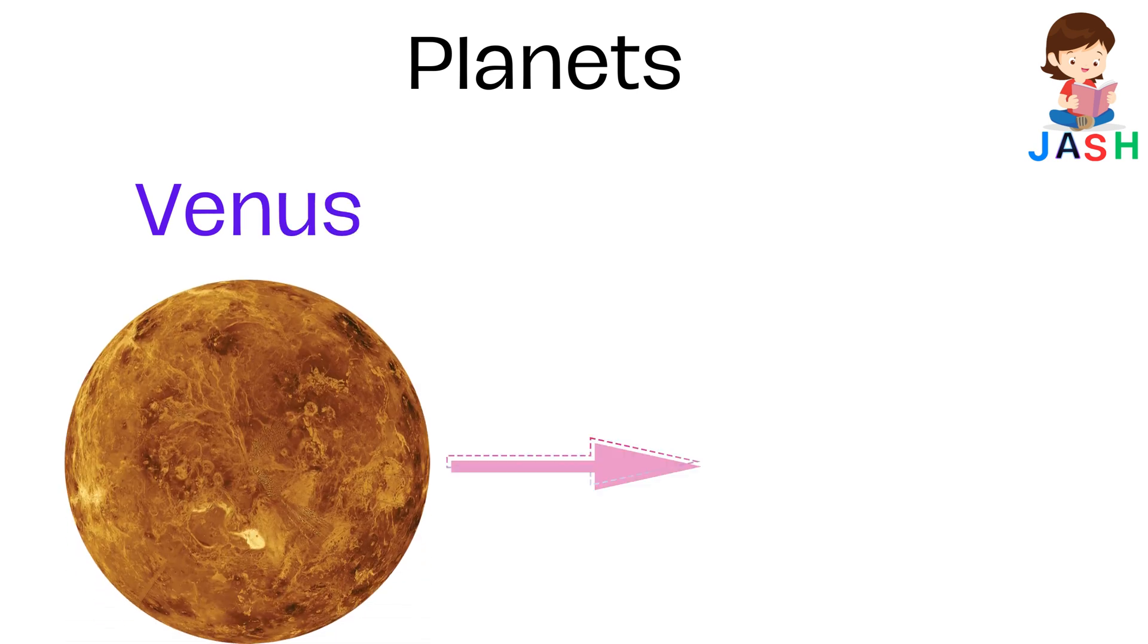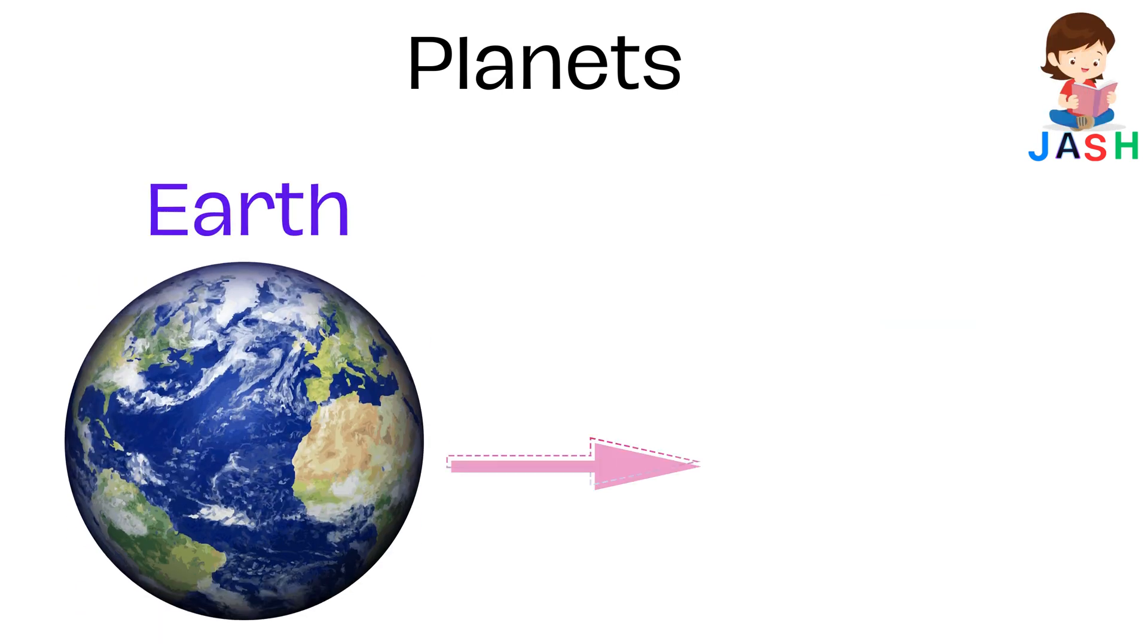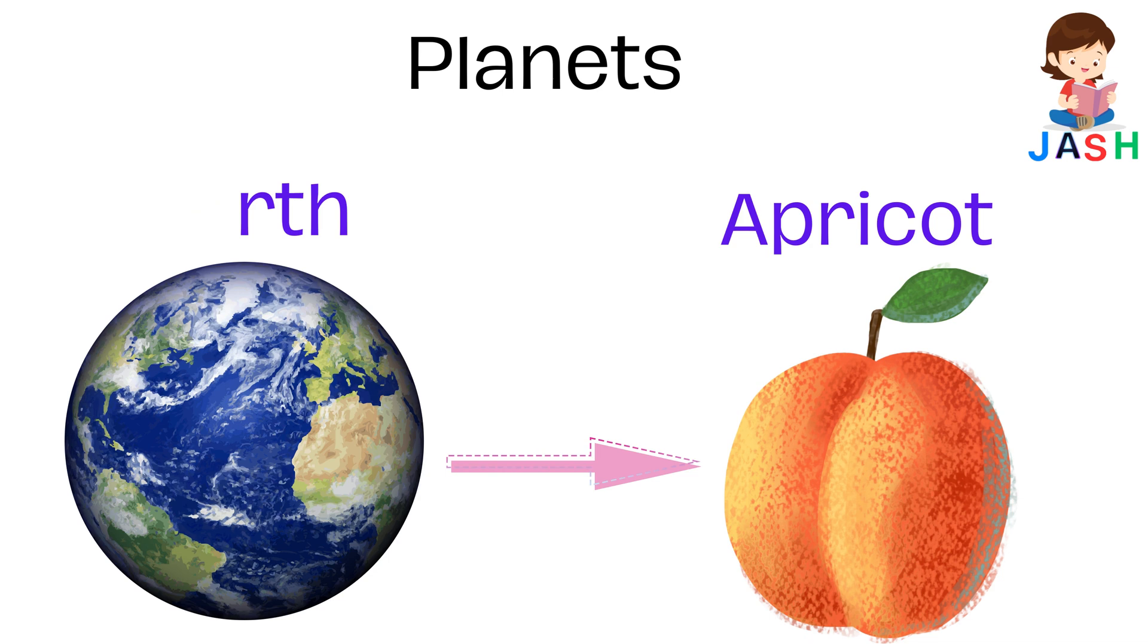Venus, shape is like strawberry. Earth, shape is like apricot.